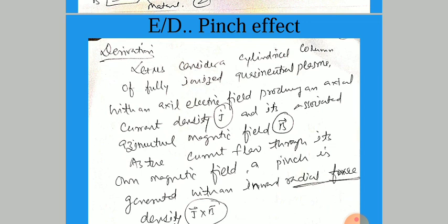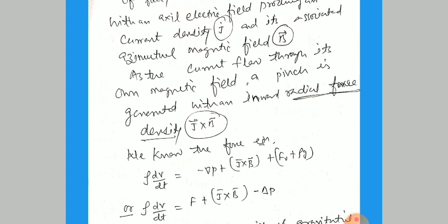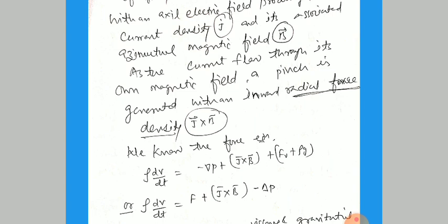Now the derivation: let us consider a cylindrical column of fully ionized quasi-neutral plasma with an axial electric field producing an axial current density J vector. It is associated with an azimuthal magnetic field B, using the Biot-Savart law. As the current flows through its own medium, it produces its own magnetic field, and a pinch is generated within the ionized medium — that is, the inward radial force density J × B.